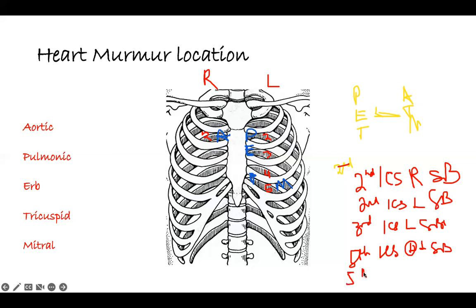And the last one — the mitral valve is also on the same side. You see how it slants — that's the way your heart starts to go down and turn around. It's the same thing: fifth intercostal space. But this line is on the clavicle — if you draw a line straight from the clavicle, it will be right in the middle. It has to be mid-clavicular, so MCL. That's the location of the murmur. So A, P, E, T — skipping the fourth intercostal space and sitting on the fourth and fifth intercostal space.